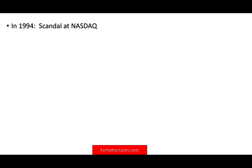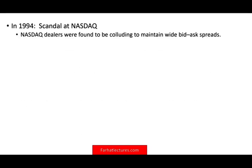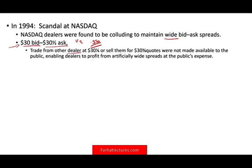In 1994, there was a scandal at NASDAQ about the bid-ask spread. Dealers were found to be colluding to maintain a wide bid and ask spread. The bid is what the dealer is willing to buy the stock at, and the ask is what the dealer is willing to sell the stock at. For example, a dealer willing to buy at $30 and sell at $30.50 is making 50 cents because of the spread. Trades from other dealers that had a lower spread — willing to buy at 30 and 1/8th and sell at 30 and 3/8th — were not made available to the public.